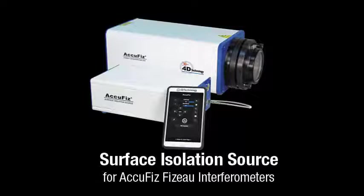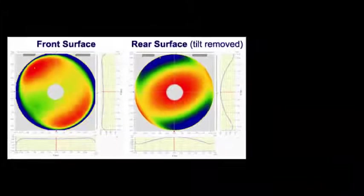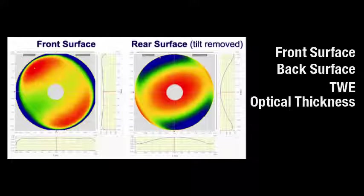4D Technology's new Surface Isolation Source lets you exclude all but the surface of interest. With the source, it is possible to measure the front and back surfaces of an optic and calculate transmitted wavefront error, optical thickness, and homogeneity.